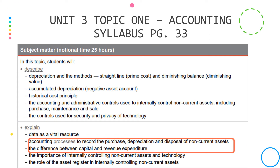If you look at your accounting syllabus, in particular page 33, you can see it has two out of the actual five dot points on the explain objective. You may be required to explain the process to record the purchase and depreciation of special non-current assets, and also explain the difference between capital and revenue expenditure. In the practical part of your question for diminishing balance, you'll have to determine whether it's a revenue or a capital expenditure.